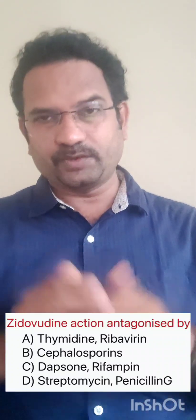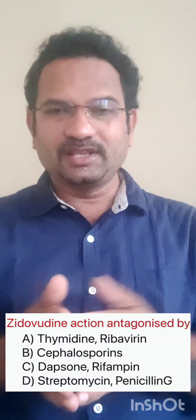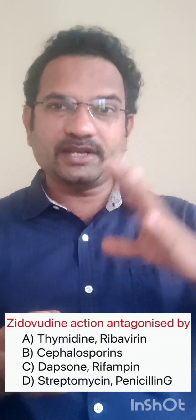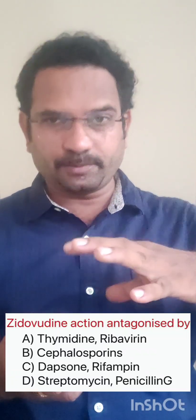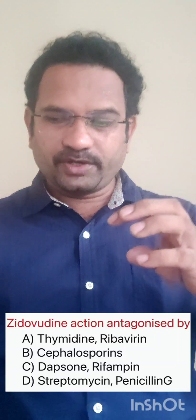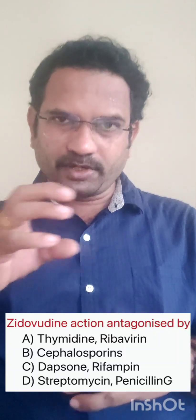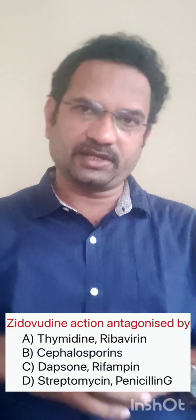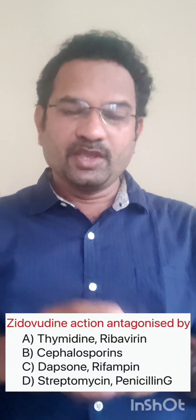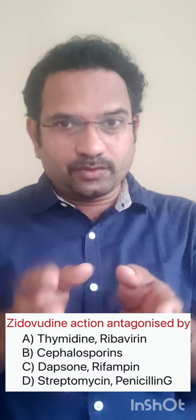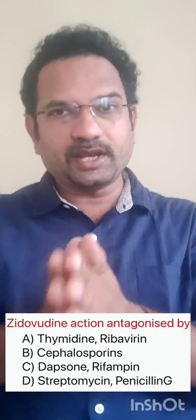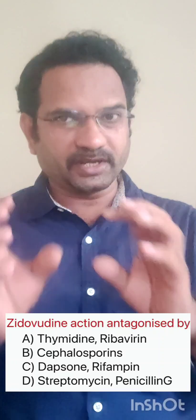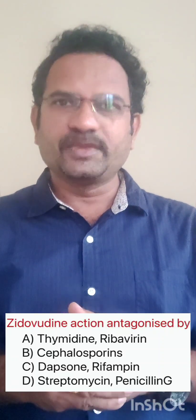The second antagonist is thymidine. Zidovudine is a thymidine analog — azidothymidine. When you give thymidine instead of zidovudine, thymidine goes into the DNA and DNA chain elongation occurs normally. So zidovudine's actions are antagonized by both thymidine and ribavirin. Understand the concept mechanism-wise and everything will be clear.